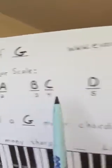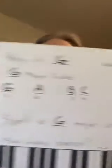So underneath your scale, it says 'spell a blank major chord' — write G. Then we spell it the same way: we take the first note, the third note, and the fifth note — G, B, D — and write that in your blank. How many sharps did we make? One. So in the 'how many sharps' blank, you write one. List the sharps: our sharp is F sharp.